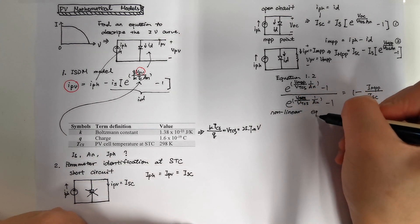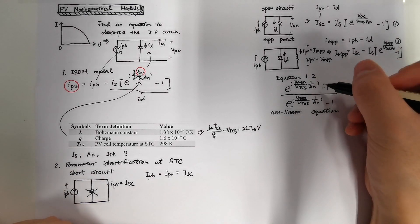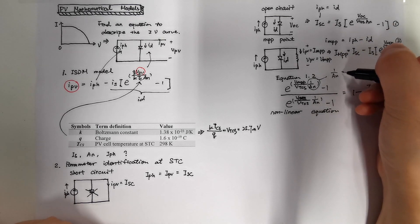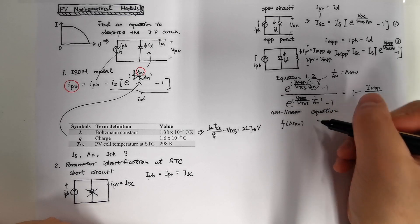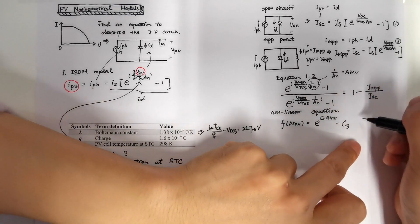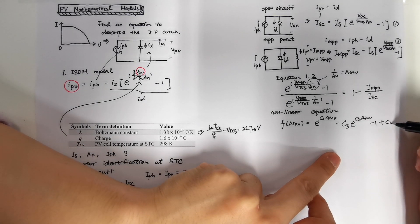And by making the 1 over AN to AN, we can put this equation as the function related to AN. So the function is f of AN equals to e to the power of C1 times AN minus C3 times e to the power of C2 times AN minus 1 plus C3 equals to 0.